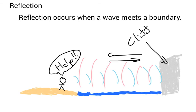Now reflection is a property of waves. Reflection occurs when a wave meets a boundary. So here's our chap stuck on this nice little desert island here. When he shouts for help, the sound wave moves forwards, it hits the boundary, which in this case is a cliff, and it'll be reflected back. So here he's shouting, the sound wave moves forwards, and it echoes back. And this effect is called an echo.